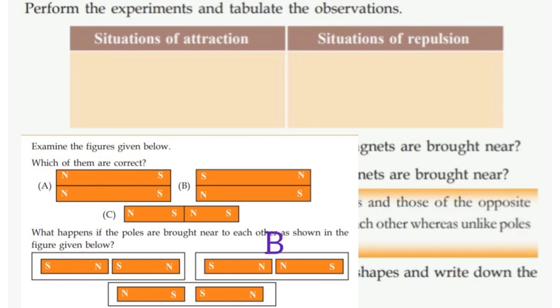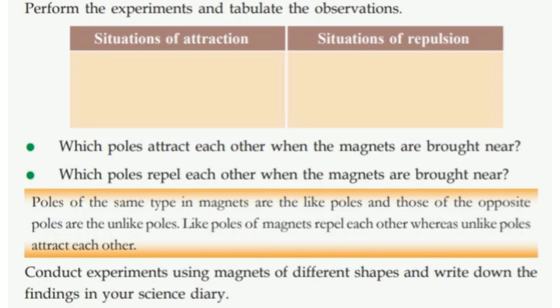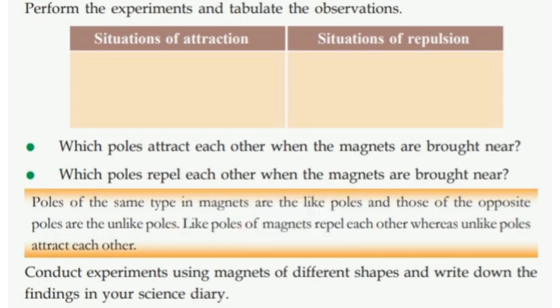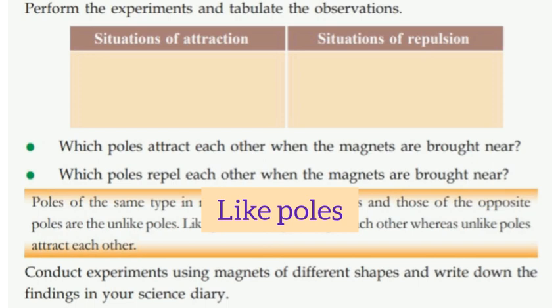A is attractive. B: S, N, N, S — this is attractive. North pole and South pole — which pole is attracted to each other when other magnets are brought near? Two magnets are brought together. North-North, South-South — they repel each other.